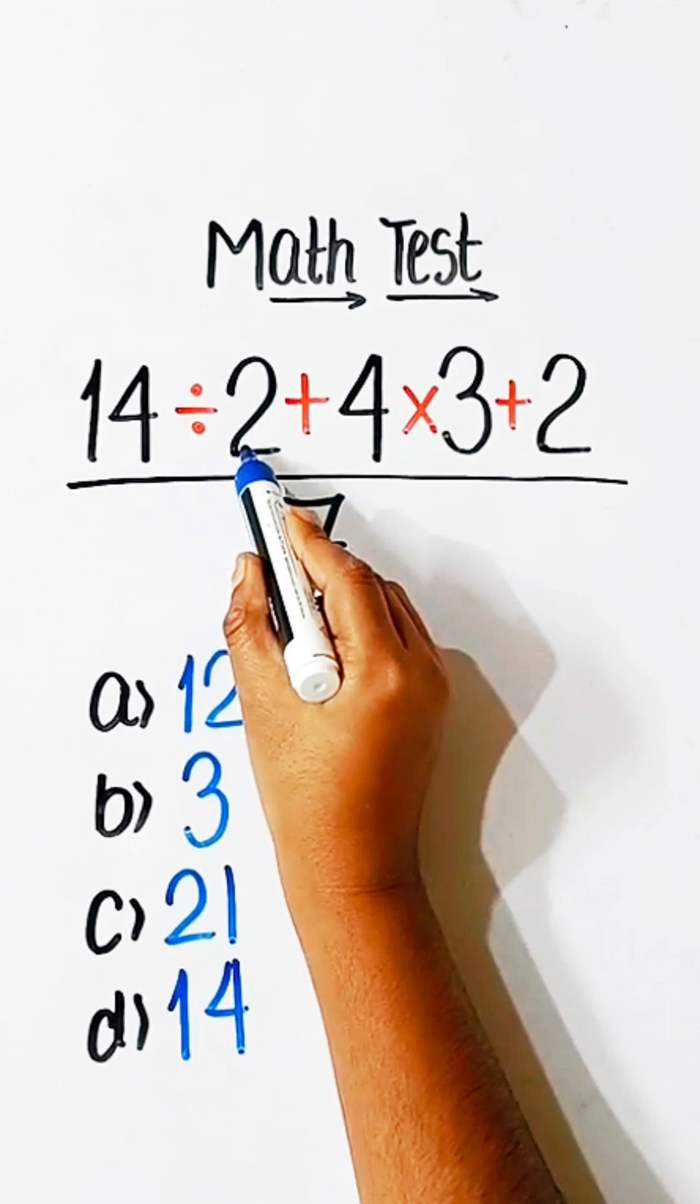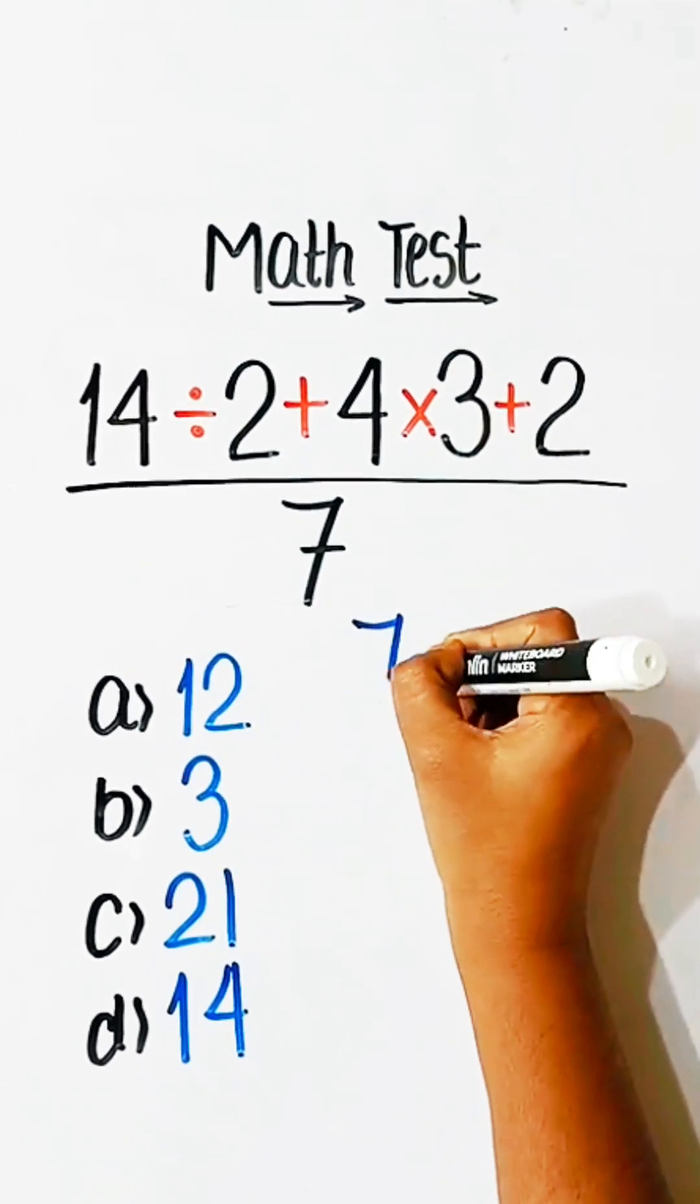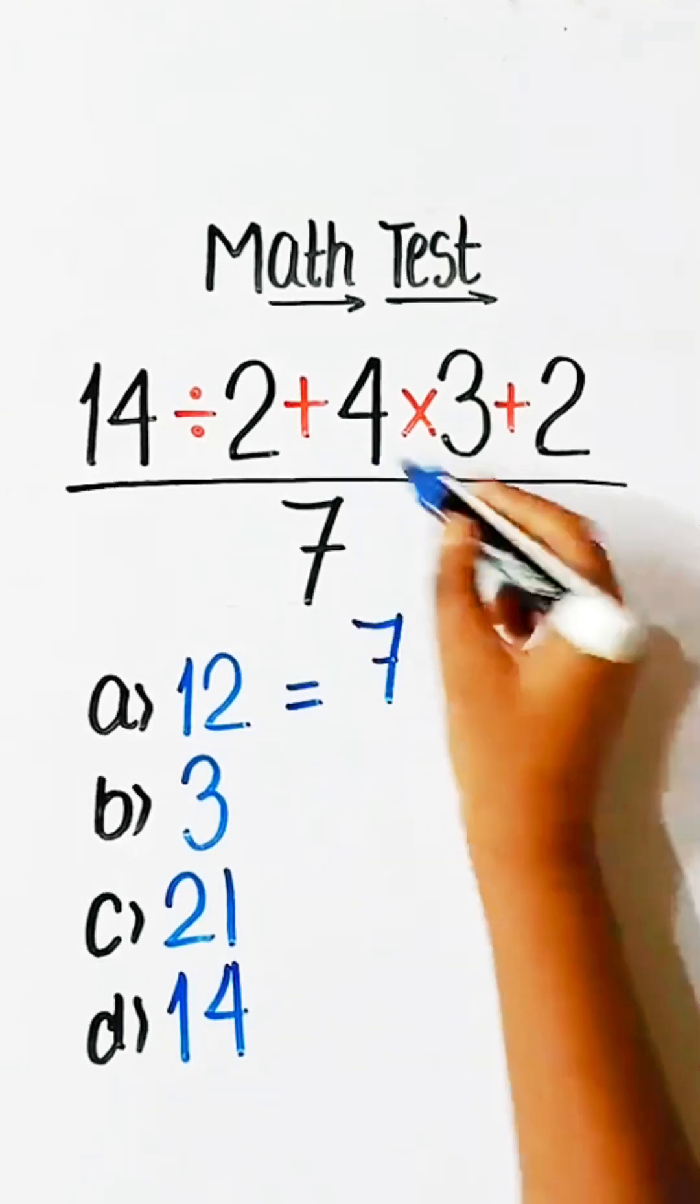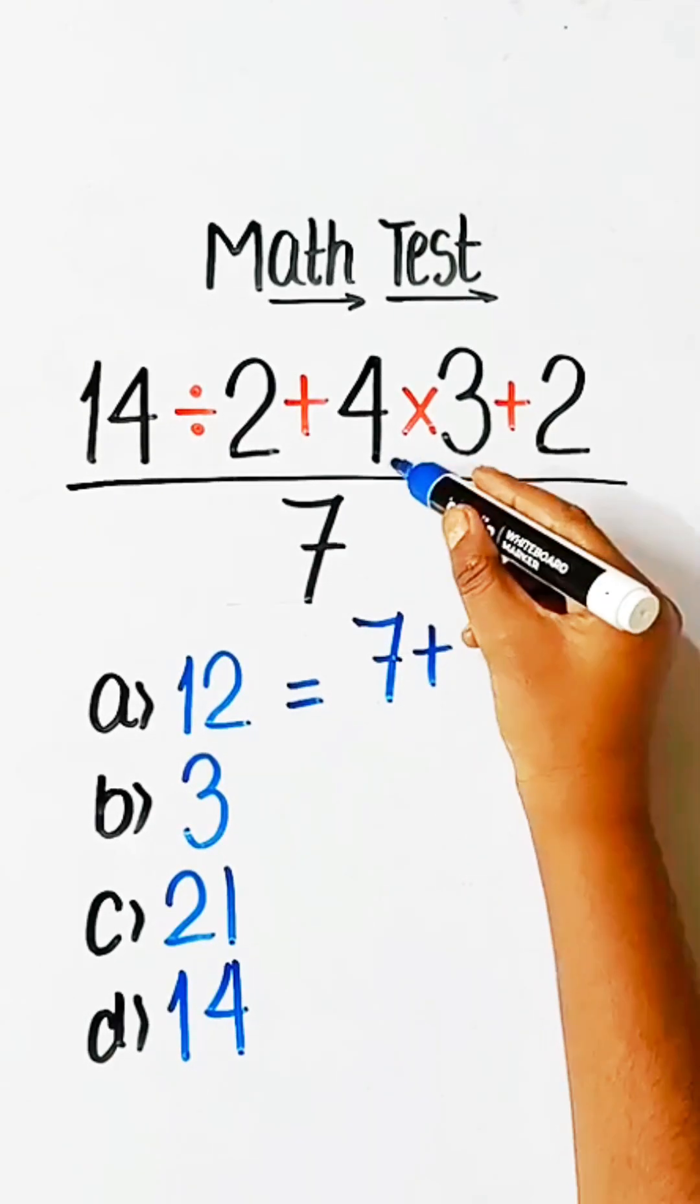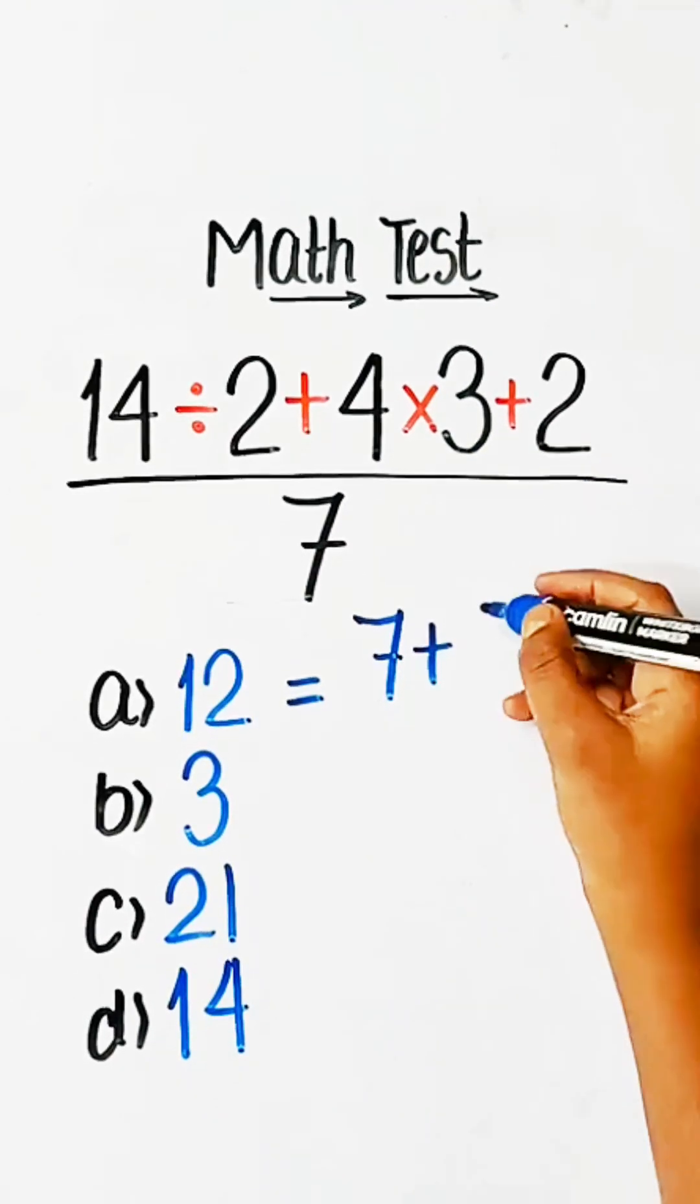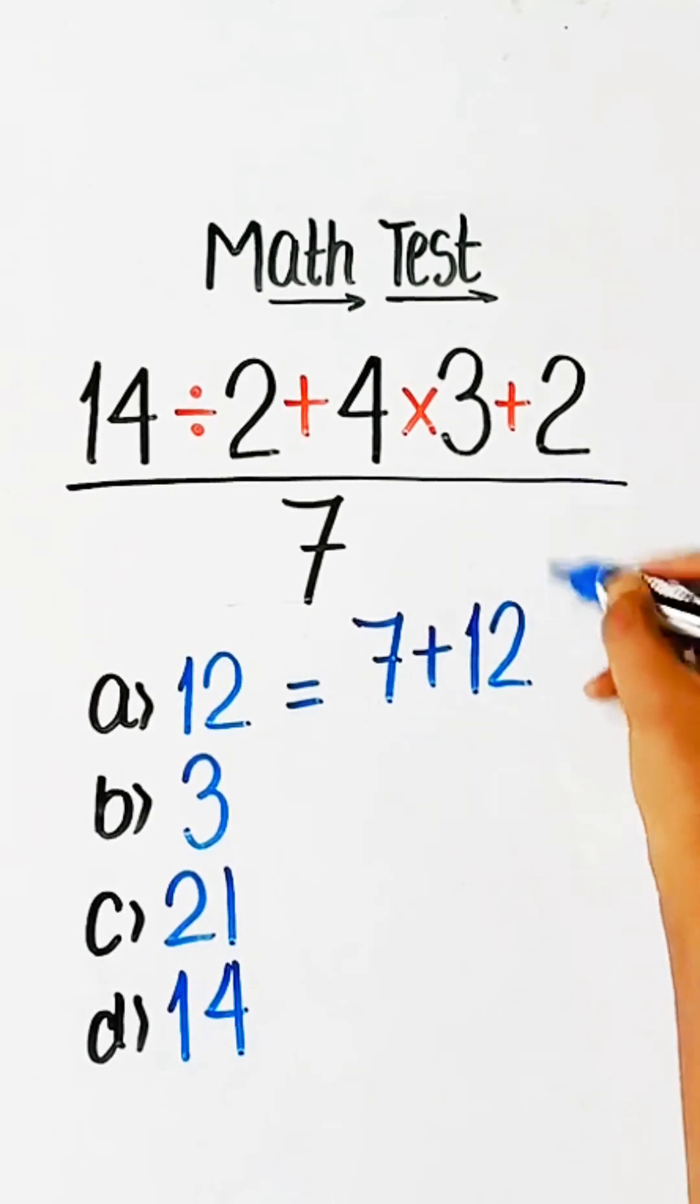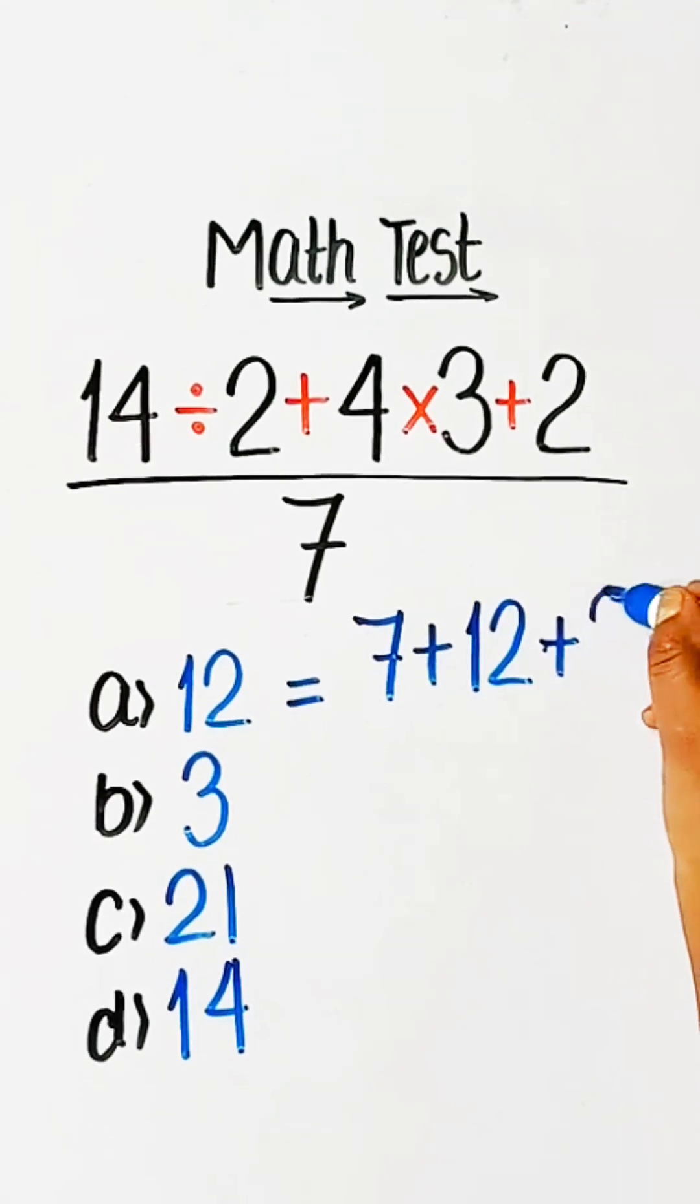14 divided by 2 is 7, plus 4 into 3 is 12, plus 2.